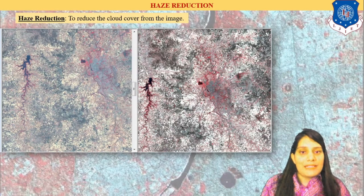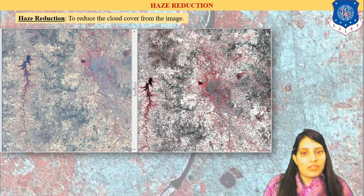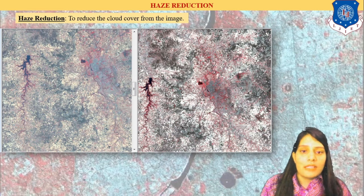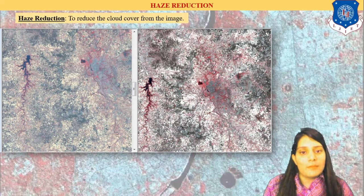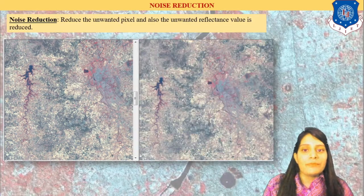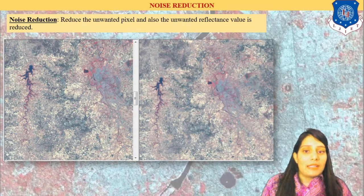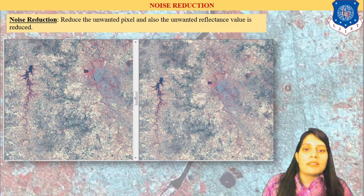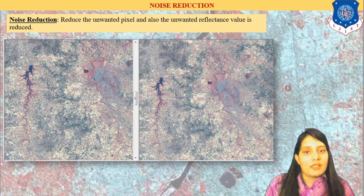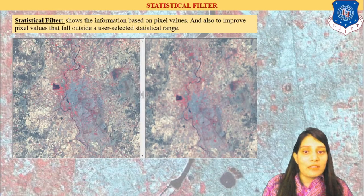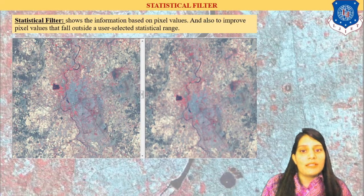Next is noise reduction. If I want to remove cloud from the image, noise reduction is applied. You can see the left side is the raw image and the right side has noise reduction applied — unwanted reflectance values are reduced, but the image gets slightly blurred. So it is not always necessary to apply the noise reduction tool. Statistical filters are generally applied to get information based on pixel values.